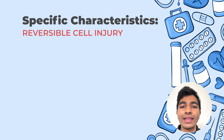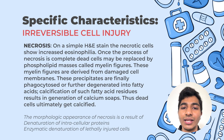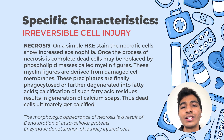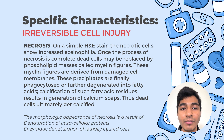Now we will look at the few characteristics of irreversible cell injury, namely necrosis and apoptosis. On a simple hematoxylin and eosin stain, the cells show increased eosinophilia, and once the process of necrosis is complete, the dead cells may be replaced by phospholipid masses called myelin figures.